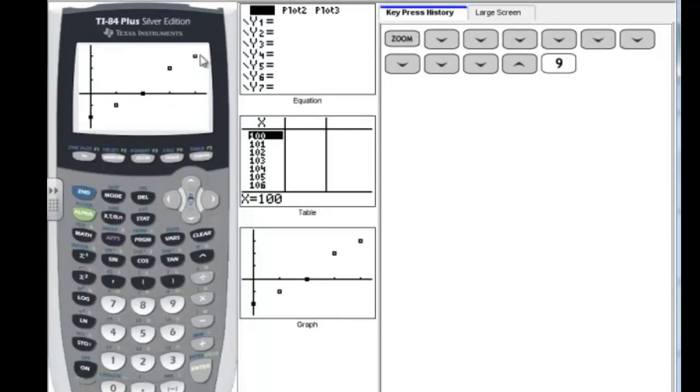Now if you're following along and you don't have your data there, it's probably because you didn't turn that plot on in the y equals screen. But now we can see that this is all the points that we just put in our data. Now we can see the graph of those points.